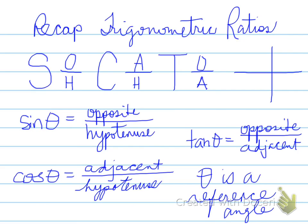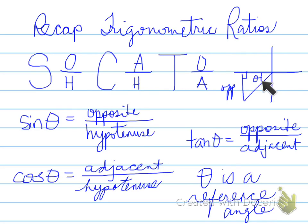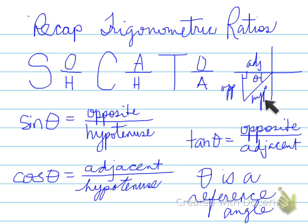Theta in this case is a reference angle. A reference angle is the angle made from the terminal arm to the closest x-axis, where the terminal arm is here and the angle made with the closest x-axis is this angle here. We only make it with the x-axis. The opposite side is found opposite the reference angle, the adjacent side is found next to the reference angle, and the hypotenuse is always opposite the 90-degree angle and is always the largest side.